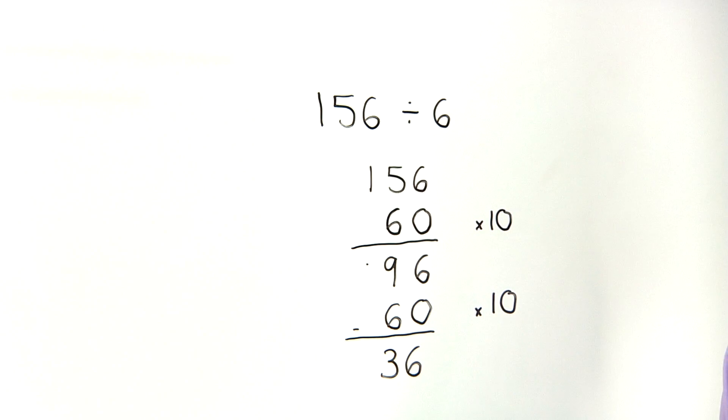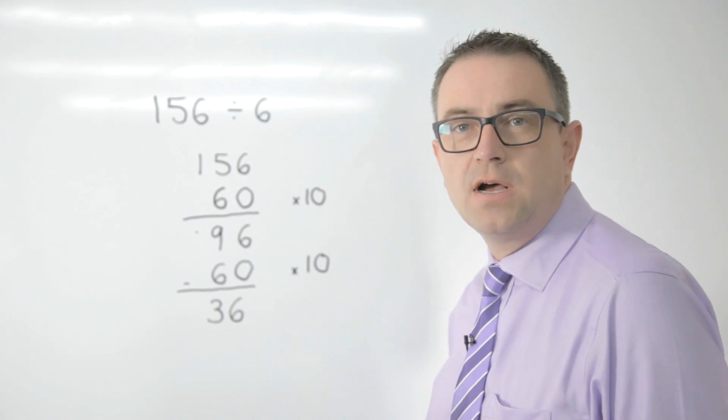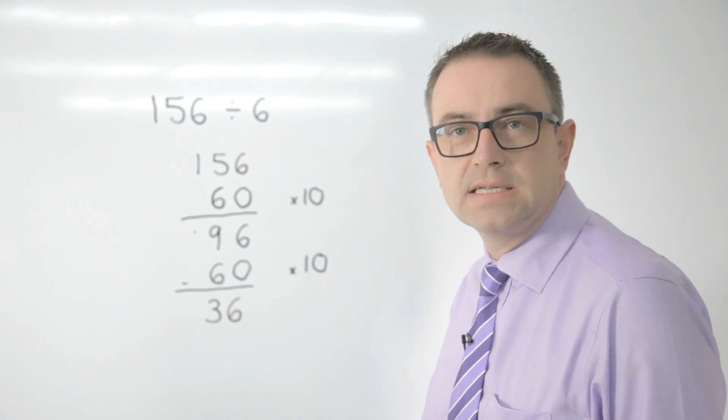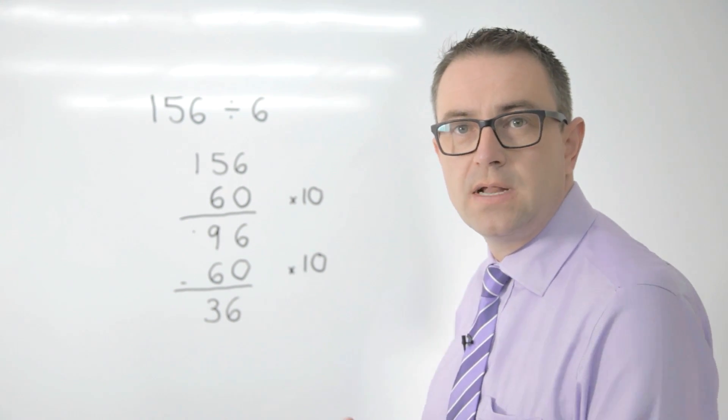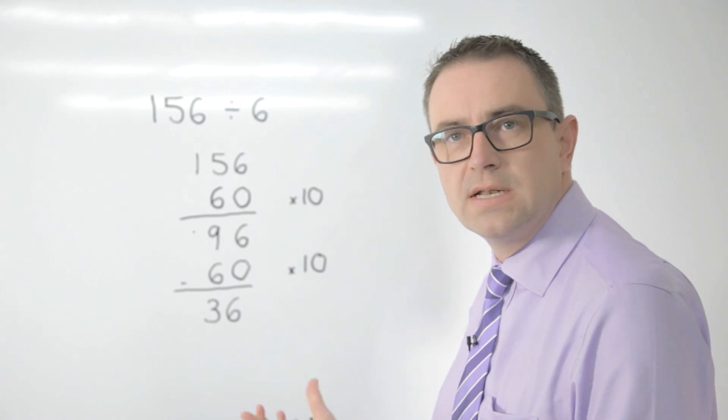Now really important here is my tables knowledge. As a child I should be able to recognize that 6 times 6 is 36, and so I can immediately jump. If I wasn't sure then I might try 2 lots of 6 or 3 lots of 6.